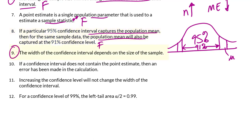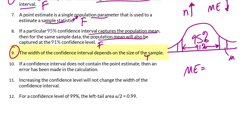Number 9: The width of the confidence interval depends on the sample size. That is true — we just saw that. The margin of error is inversely proportional to the sample size, so if the sample size increases, the margin of error will decrease.